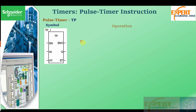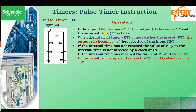The text says: if the input IN becomes one, the output Q becomes one and the internal time ET starts. When the internal time ET value reaches the preset value, the output Q becomes zero, irrespective of the input IN. If the internal timer has not reached the preset value yet, the internal time is not affected by a clock on the input pin. If the internal time has reached the preset value and IN is zero, the internal time stops and resets to zero, and Q becomes zero as well.